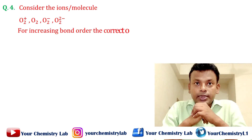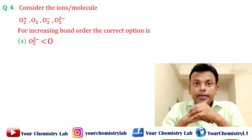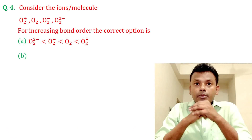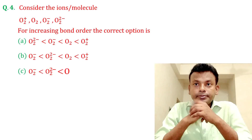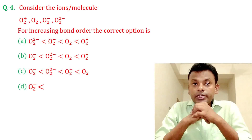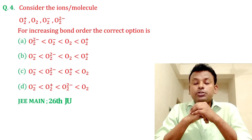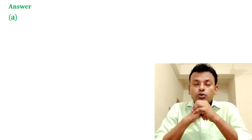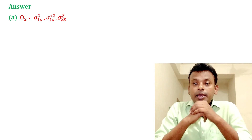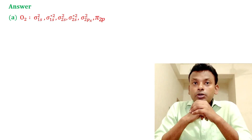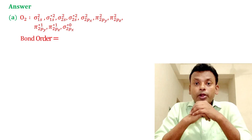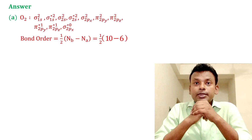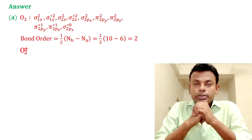Question 4: Consider the ions or molecules O₂⁺, O₂, O₂⁻, O₂²⁻ — find the correct option for increasing bond order. This question was set in JEE Main 26th June 2022 morning shift. Answer: Option A is correct. For O₂, the molecular orbital electronic configuration shows bonding electrons = 10 and anti-bonding electrons = 6, so bond order = 2. For O₂⁺, bond order is higher at 2.5.